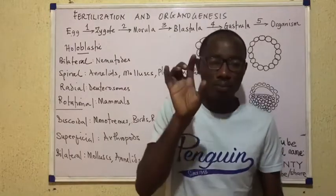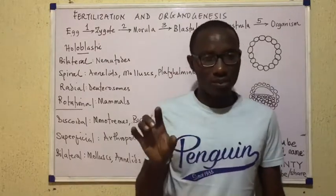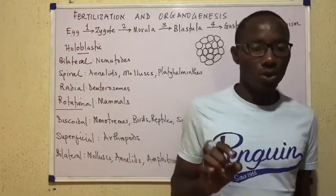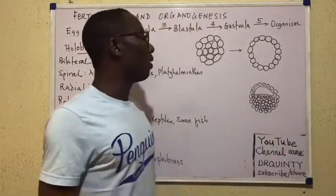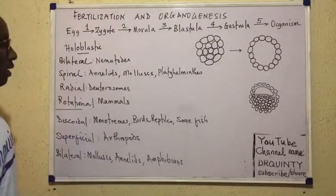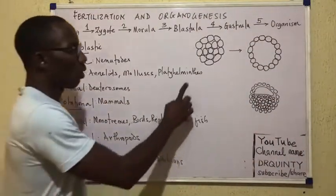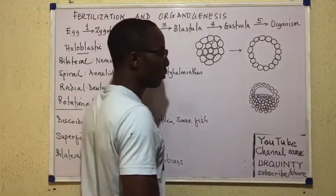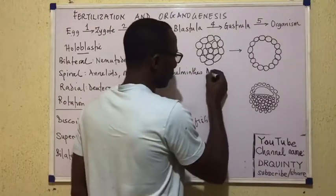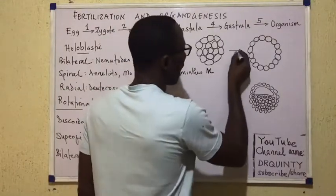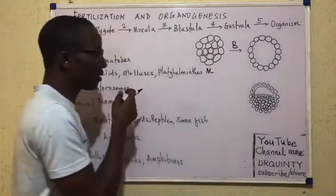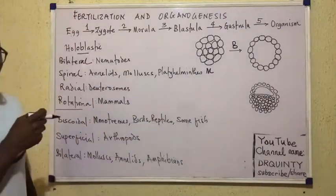By the way, once implantation takes place, what you have there is called an embryo. So having said that, let's come back. So what we have here is the morula — M stands for morula. And then B stands for blastulation.